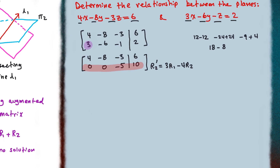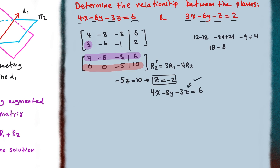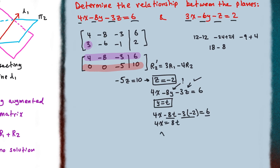Using the last row, we get negative 5 times z equals 10, so rearranging gives z equals negative 2. Now using the first row: 4x minus 8y minus 3z equals 6. Since z equals negative 2, we let y equal to t and rewrite: 4x minus 8t minus 3 times negative 2 equals 6. Simplifying gives 4x equals 8t, or x equals 2t.